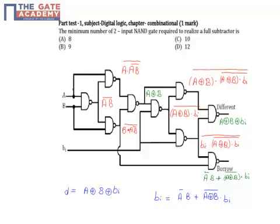Question is: the minimum number of two input NAND gates required to realize a full subtractor is. Option A is 8, option B is 9, option C is 10, option D is 12.